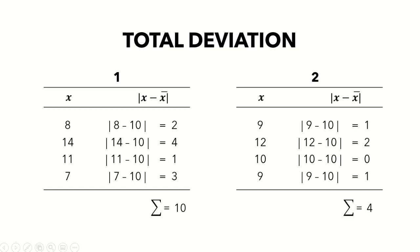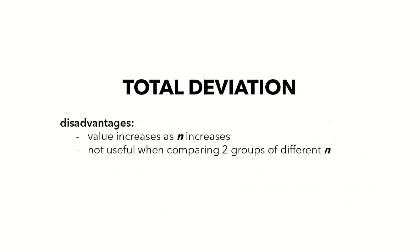However, there are still some problems with total deviation. As we increase the number of observations, the value of the total deviation also increases — a fairly large data set will have a high total deviation even if the data points are close to each other, simply because we're summing more deviations. This means that if we're comparing two data sets with different numbers of observations, total deviation may not be a useful tool. It would be better if our measure of variation were independent of population or sample size.